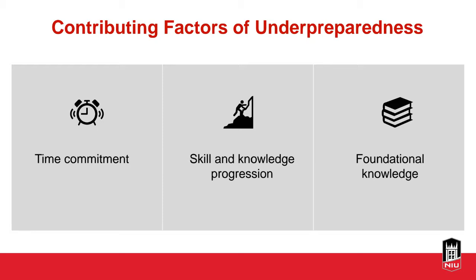Now that we have a working definition of what it means to be underprepared or under-resourced, let's look at some contributing factors of why a student might be underprepared. When we think of warning signs for struggling students, we can look at three probable factors: a student may not exhibit the skills, the knowledge, or the behaviors necessary to succeed. On behaviors — they may not have anticipated the time commitment involved, which can be particularly prevalent if they're falling behind in coursework done outside the classroom.